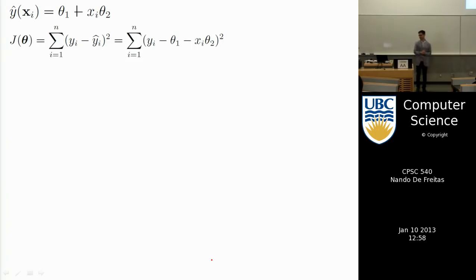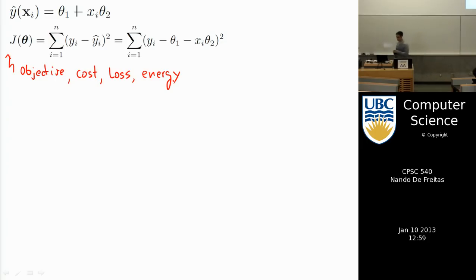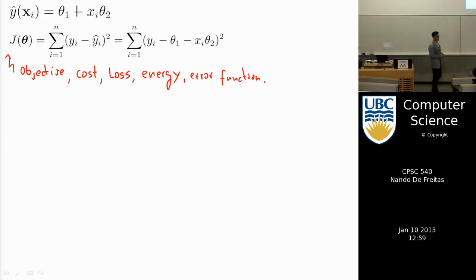This J I'll call an objective function, a cost function, a loss function, an energy function, or an error. The optimization approach to machine learning is about formulating a cost function; once you have it, you find its minimum and that's the solution. The cost function depends on the data.